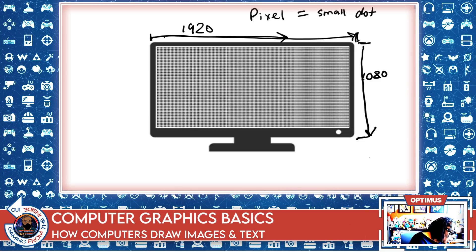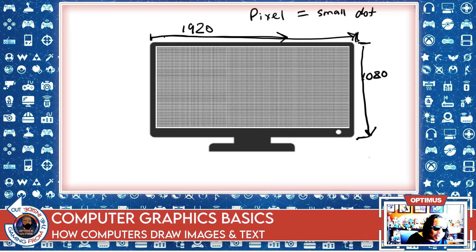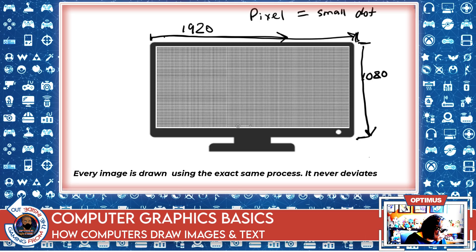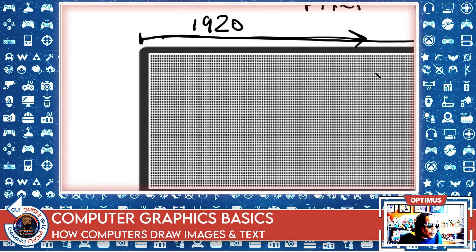Keep in mind that each computer monitor is just filled with small dots that we call pixels. Something very important to note: the computer draws every image, every piece of text, everything that shows up on screen — the computer draws it all the exact same way. So how does the computer draw using these pixels?